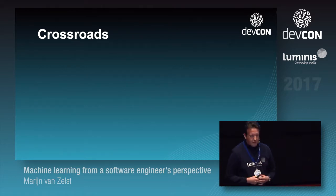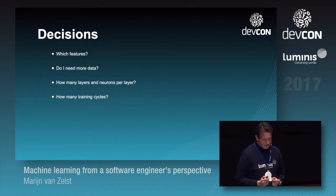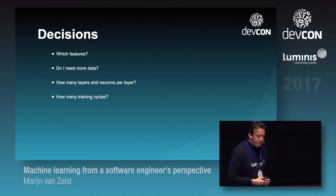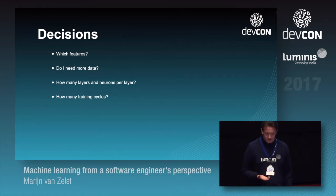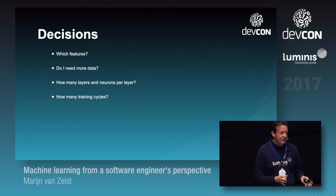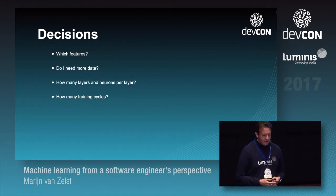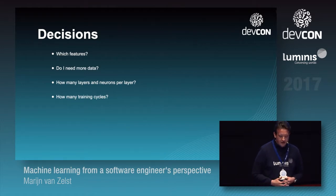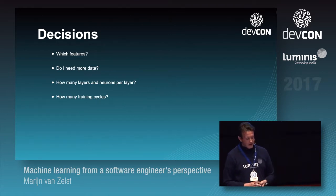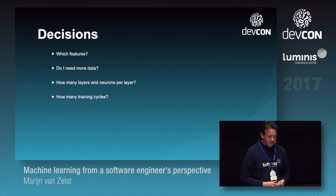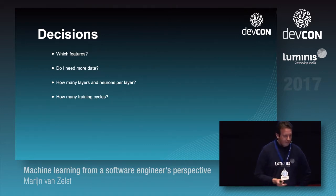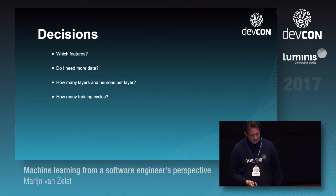The key decisions you need to make when implementing a neural network are: which features will I use for my dataset? Do I need more data — will accuracy improve with more data? How many layers and how many neurons per layer? And how many training cycles do I need? I will hopefully answer these questions.